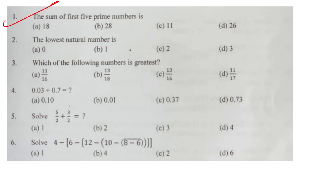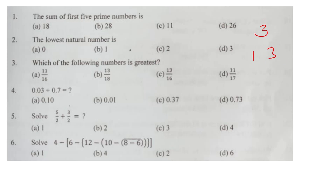First question: the sum of the first 5 prime numbers. Prime numbers are those numbers with only two factors. The first 5 prime numbers are 2, 3, 5, 7, 11.